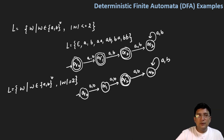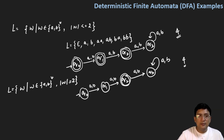So in this case, when we were finding the automata for the length of the string less than or equal to two, the number of states is four. And similarly, when designing the automata for exactly the two-length string, once again the number of states is four. Now let's design the automata for another language.